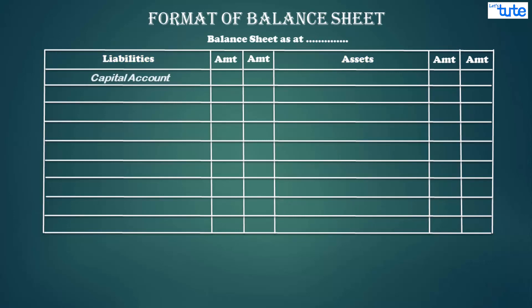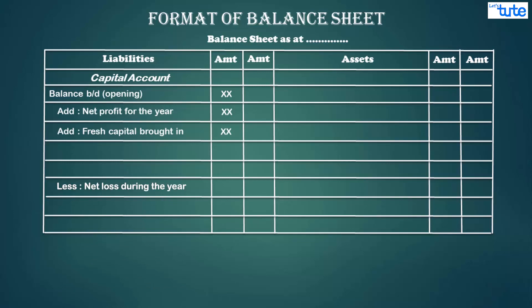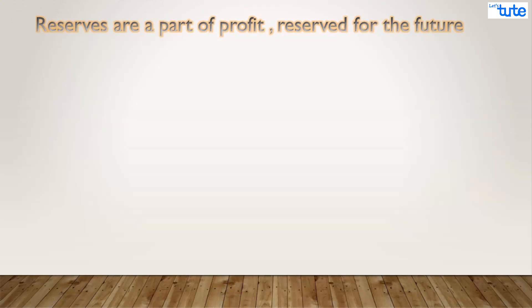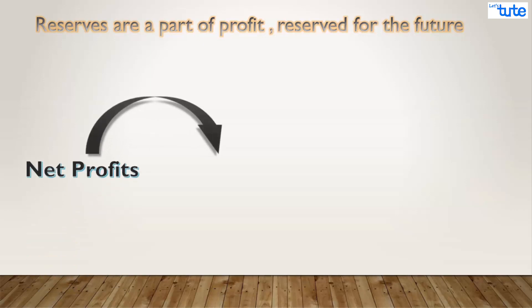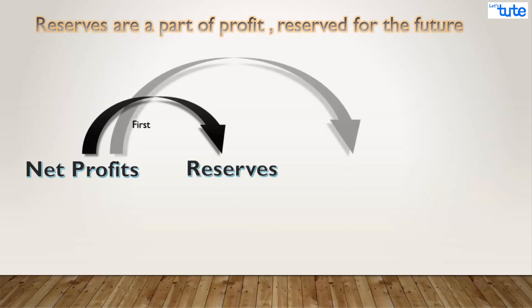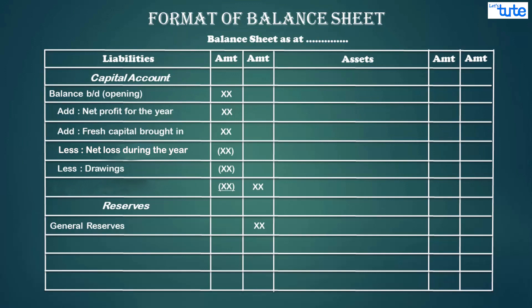On the liability side, capital — the amount due to the owner — is shown as the first heading. It is presented as: opening balance, plus net profit for the year and capital brought in, minus net loss for the year and drawings, equaling net capital. Next are reserves, which are part of profit reserved for future use — an amount set aside out of profits to meet unknown or sudden liabilities. Out of net profit, some amount is transferred first to reserves, and only the balance is transferred to the capital account.